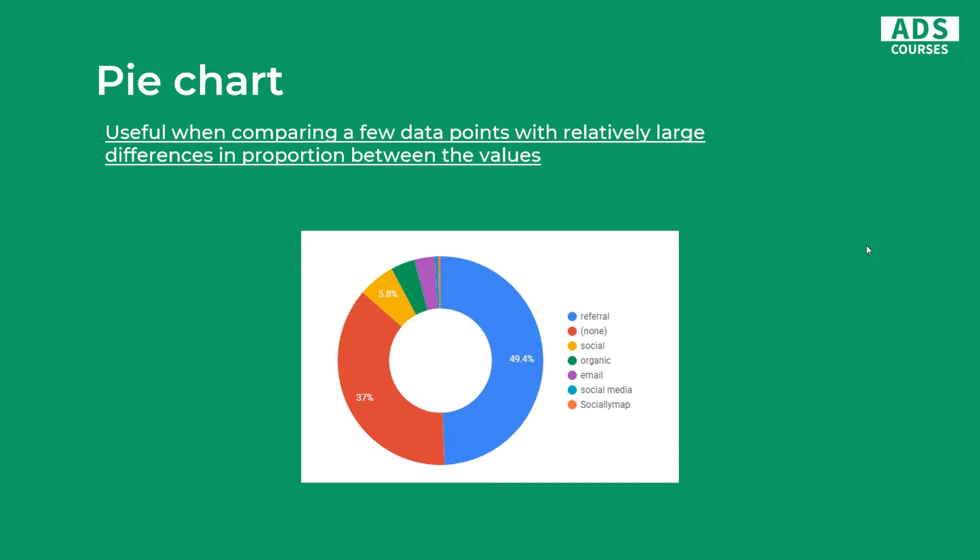Next we have a pie chart — a pretty common chart type. It's useful when comparing a few data points with relatively large differences in proportion between the values. This example is actually not the best use of a pie chart — it would be better to use a horizontal bar chart to visualize this data. Basically you want to use a pie chart when you have like four values of the same dimension and the differences between them are big. I will show more good and bad examples of pie charts later in this video.